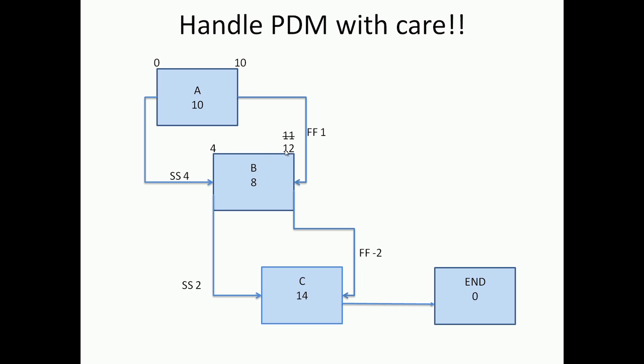One of the options is for B the early finish could be 12, or if I come with the other relationship, the finish-finish relationship from A, A's early finish is at 10. If I use the finish-finish relationship, it should finish by 11. When I take between 11 and 12, 12 is more constraining. So I keep 12 as the early finish and then move on to the next activity which is C. Here again you have a start-start relationship of 2 between B and C. When I come down to C using the lag of 2, C's early start becomes 6 and going through the duration of C which is 14, the early finish of C becomes 20.